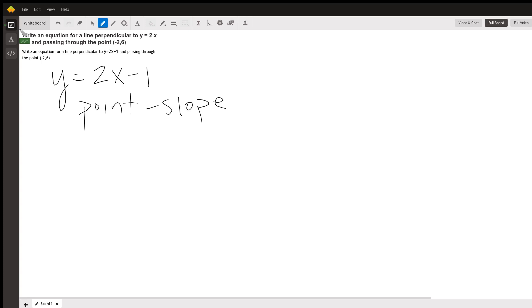Now point-slope form is written (y - y₁) = m(x - x₁), and this form of a line is really convenient when you know what the slope is, which is m, and then you have a particular point which has those coordinates x₁, y₁.